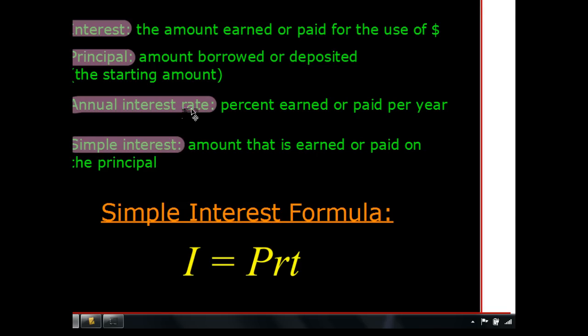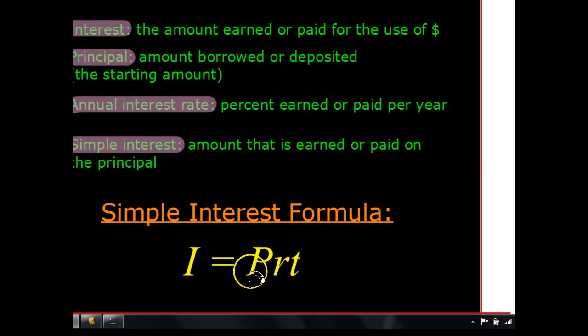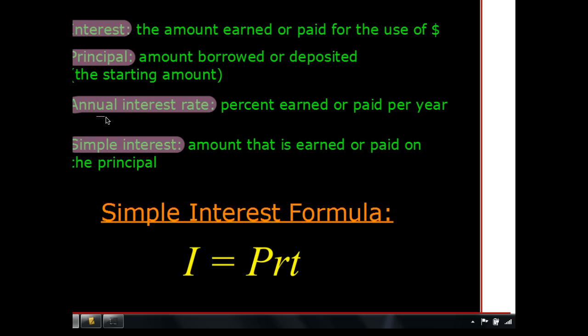Simple interest is the amount earned or paid on the principal, calculated per year. There's a more complicated and realistic concept called compound interest, but we'll get to that later. The simple interest formula is: I equals P times R times T, where I is the interest — the amount you make or have to pay — P is the principal, R is the interest rate as a percent, and T is time. T must be measured in years because we're talking about annual rates. If you're given time in months, you must convert it to years.